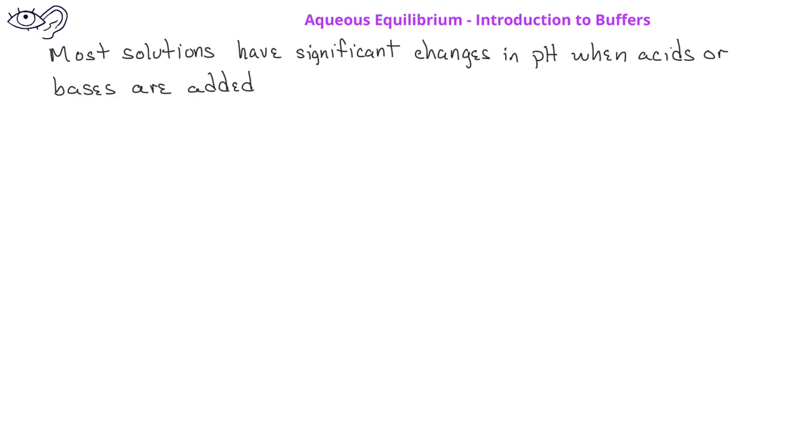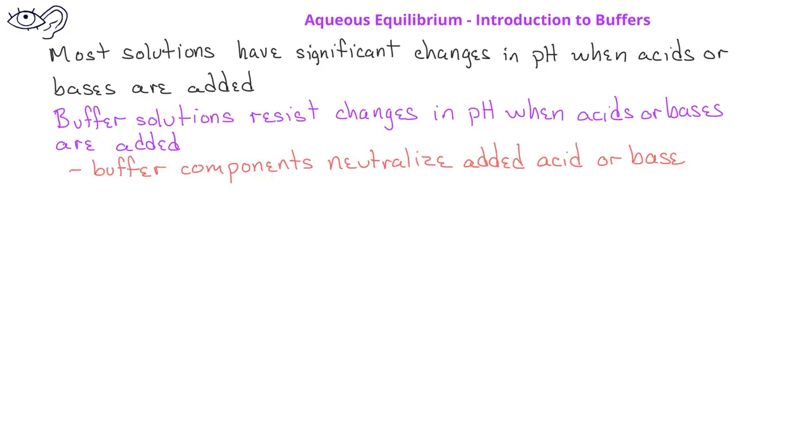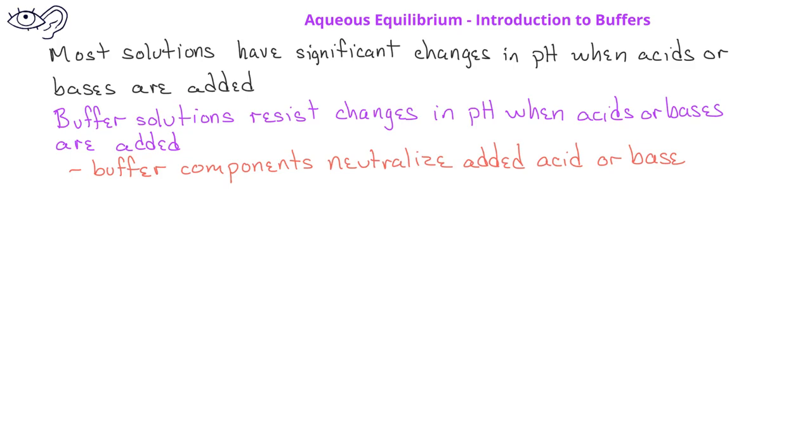Buffer solutions resist changes in pH by neutralizing any added acid or base. Buffers must contain either a significant amount of a weak acid and its conjugate base, or they can contain significant amounts of a weak base and its conjugate acid.